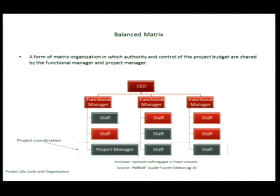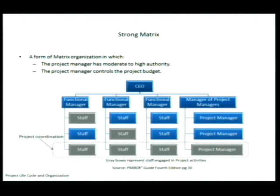In the balanced matrix, the project manager is now on the radar and begins to manage. The project manager's authority is shared with the functional manager — that's why we call it balanced; it's better than the functional and weak matrix. Moving on to the strong matrix: there's a manager of project managers, the project manager has more authority — moderate to high — and controls the project budget.